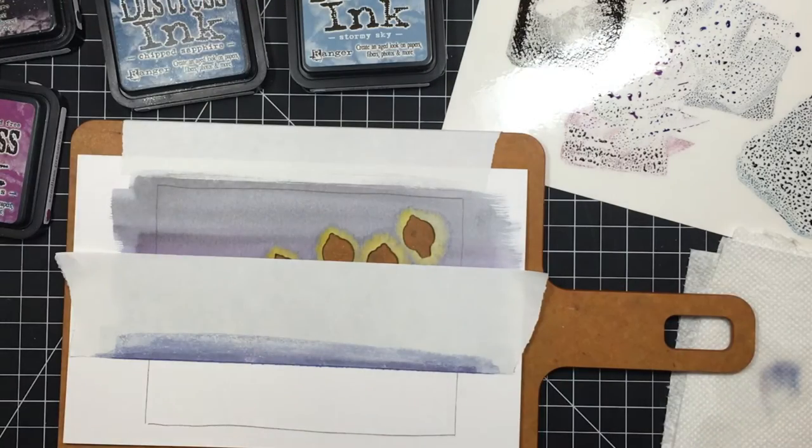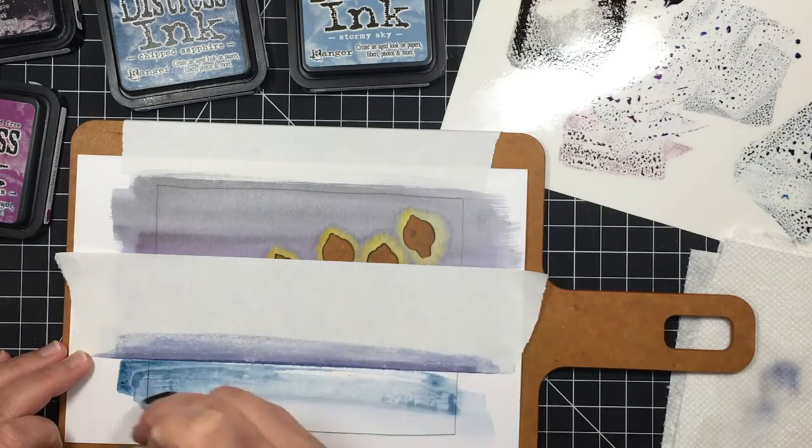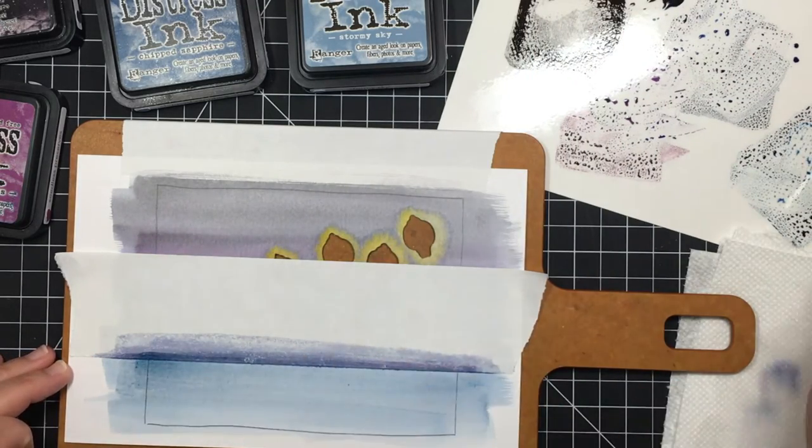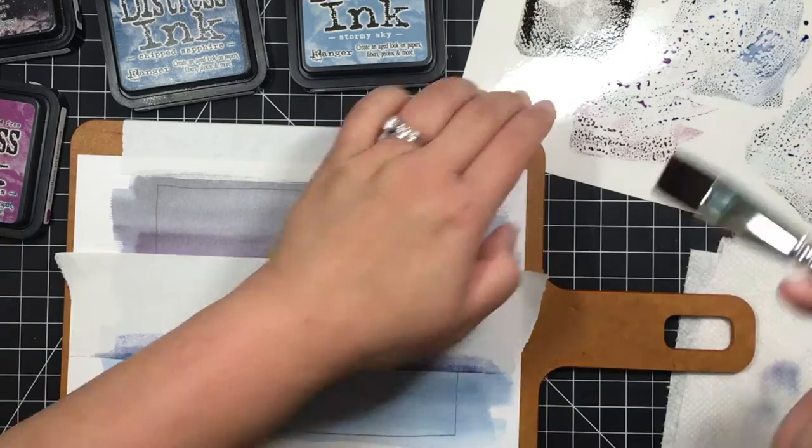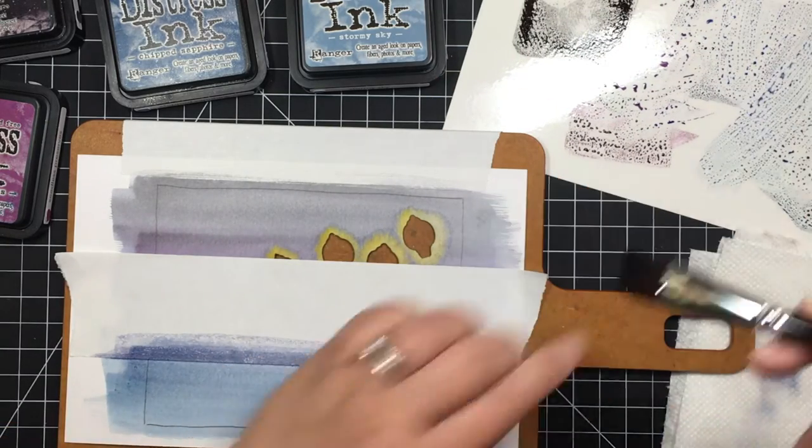I dry it with my heat gun and then mask off the top so I can work on the water. I paint the water with a mix of stormy sky and chipped sapphire. I remove the mask and add a layer of water to blend the edges together.